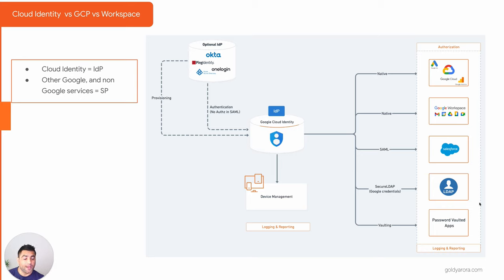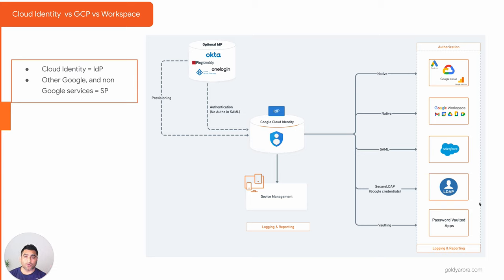All the logging and reporting — for example, who is logging in from which IP — is available in the Google Cloud Identity admin console. However, logging in terms of what users are doing inside the end applications themselves — for example, did a user create a virtual machine or a storage bucket in Google Cloud Platform — that level of application-specific reporting will be available in the application itself, not in Google Cloud Identity.